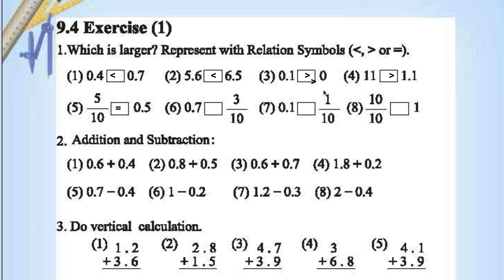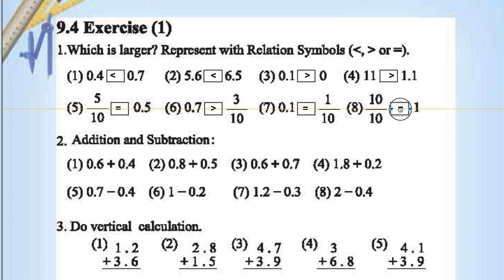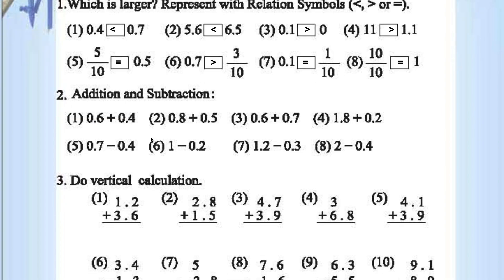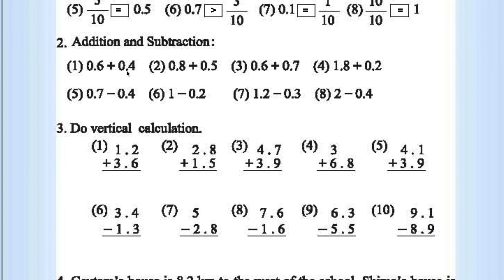0.1 and 1/10 — both are equal. 10/10 equals 1, so both are equal. Now let's do addition and subtraction: 0.6 plus 1.4 is 1.0. This is 1.3. This is again 1.3. This is 2. This one is 0.3. This is 0.8. This is 0.9. This is 1.6.